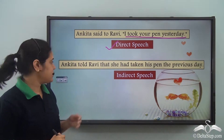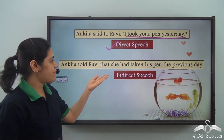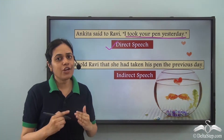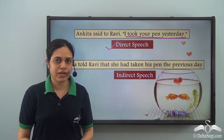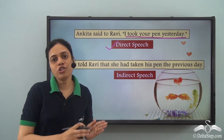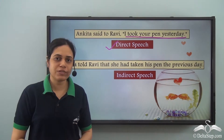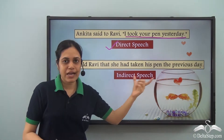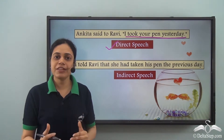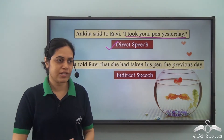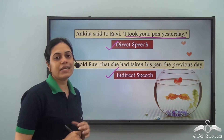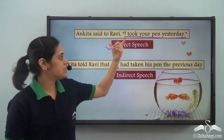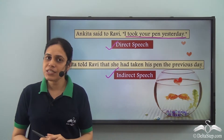Whereas in this sentence: 'Ankita told Ravi that she had taken his pen the previous day.' We are not directly quoting the words of Ankita. We are not using the exact words of the speaker; we are stating what the speaker said in other words without changing the meaning. This is indirect speech. So both are ways of reporting — this is direct speech, and this is indirect speech.